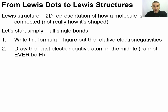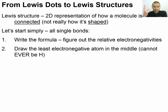Next, draw your least electronegative atom in the middle — though it can never be hydrogen. Why? Hydrogen has one proton. If it shares any electrons it's going to have two electrons, and that's all it can manage. So how can it be a central atom if it can only be bound to one thing? It's not going to pick up multiple bonds, so it can never be in the center.